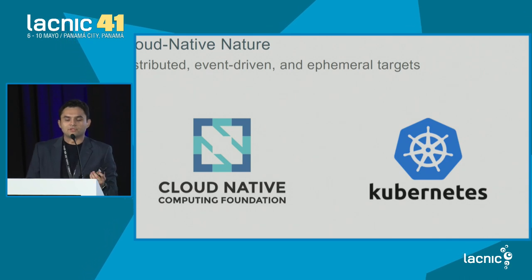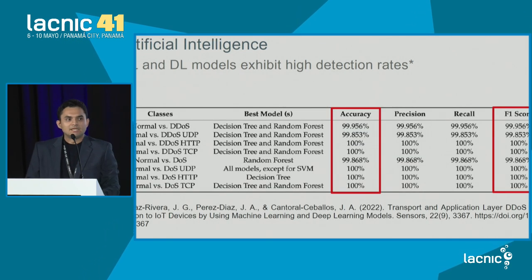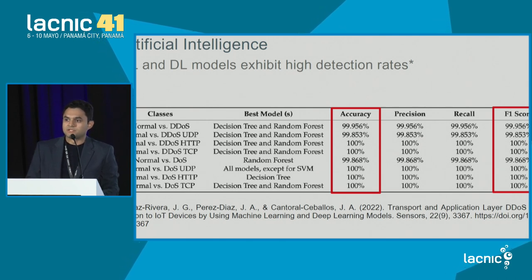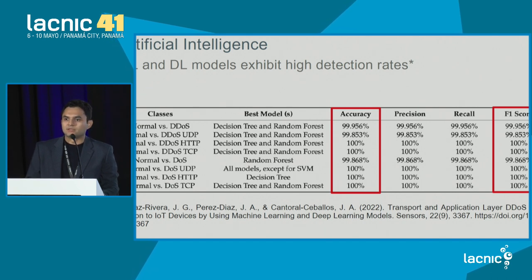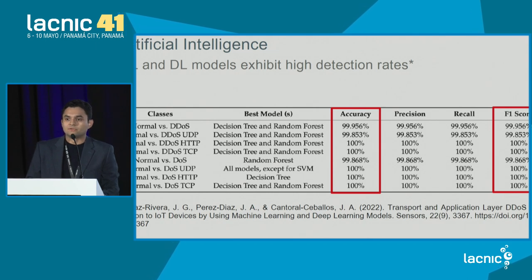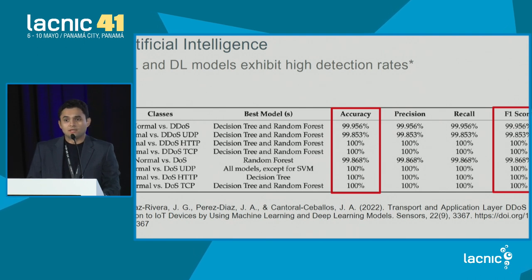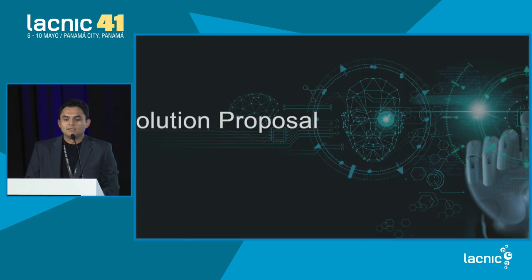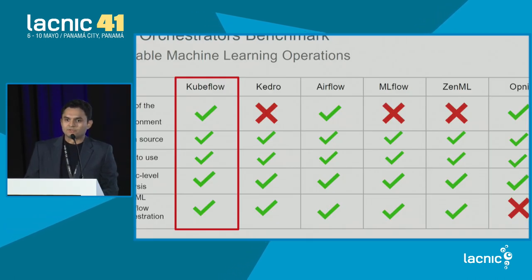We are speaking of open source cloud-native foundation technology. So how do we add artificial intelligence? Machine learning and deep learning models are well known for their high detection rates. In an article I published in 2022 on DDoS, it was estimated that tree-based models in terms of accuracy, precision, and recall reach a 100% score.